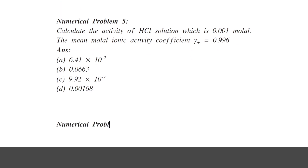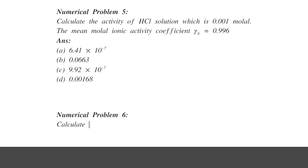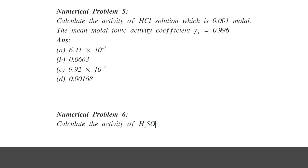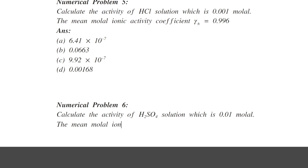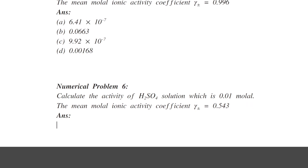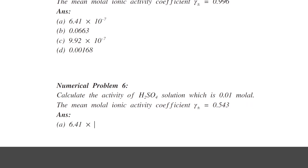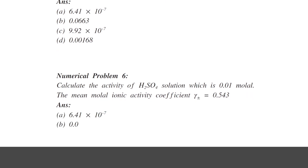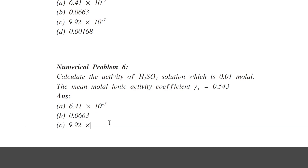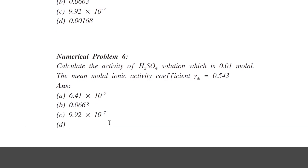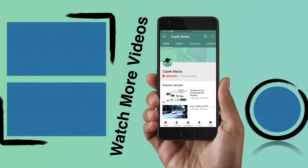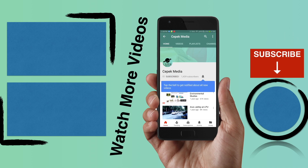Last example: Calculate the activity of sulfuric acid solution that is 0.01 molal, with mean molal ionic activity coefficient Gamma equals 0.543. Possible answers: A) 6.41×10⁻⁷, B) 0.0663, C) 9.92×10⁻⁷, D) 0.00168. Please try to solve all these problems and write the correct answers in the comment box — let's see who gets them right.